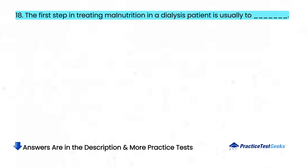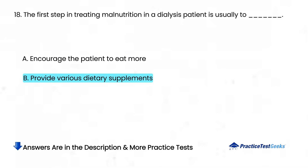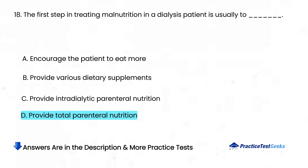The first step in treating malnutrition in a dialysis patient is usually to: A. Encourage the patient to eat more. B. Provide various dietary supplements. C. Provide intradialytic parenteral nutrition. D. Provide total parenteral nutrition.